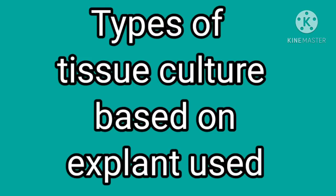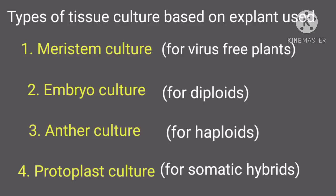Tissue culture material is also classified based on the explant used. If meristem is used, it is called meristem culture. When embryo is used, it is embryo culture. When anther is used, it is anther culture. When protoplast is used, it is protoplast culture.